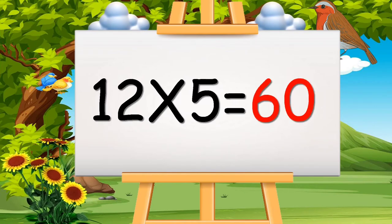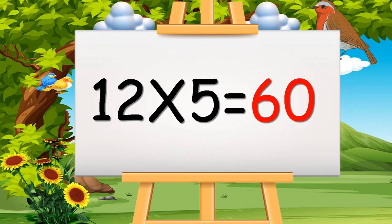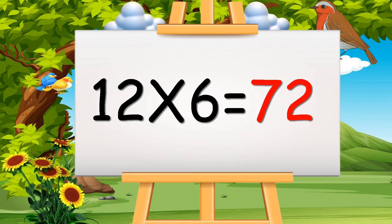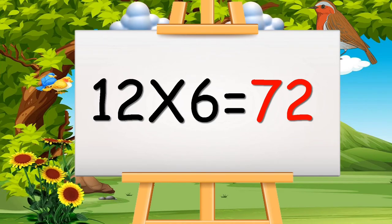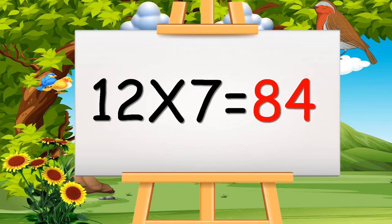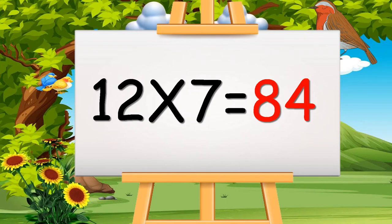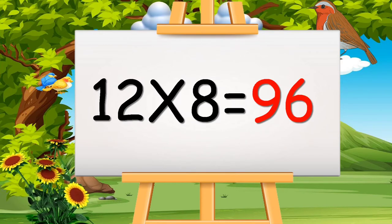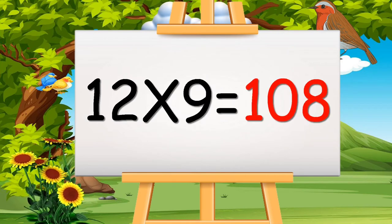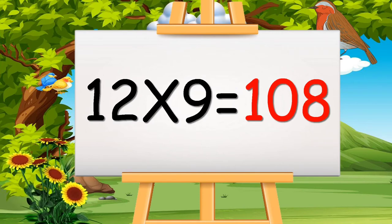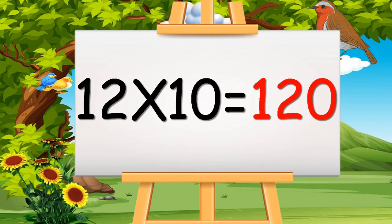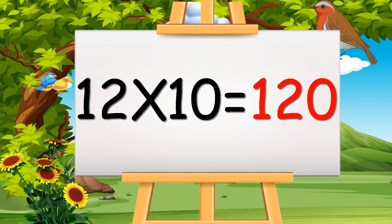12 fives are 60. 12 fives are 60. 12 sixes are 72. 12 sixes are 72. 12 sevens are 84. 12 sevens are 84. 12 eights are 96. 12 eights are 96. 12 nines are 108. 12 nines are 108. 12 tens are 120. 12 tens are 120.